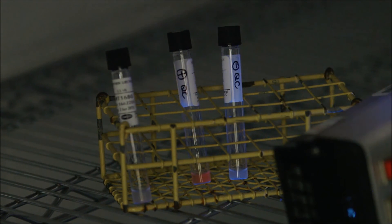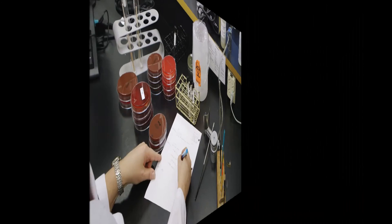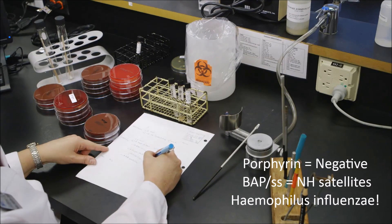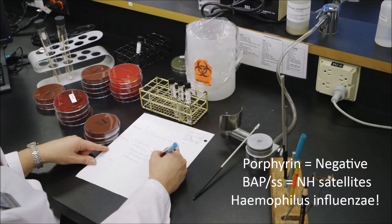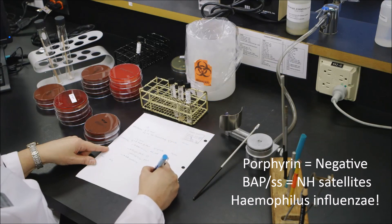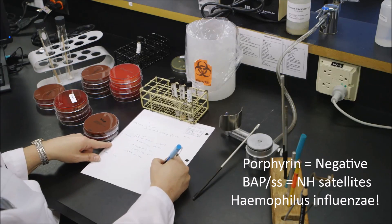So based on these results, the unknown is read as porphyrin negative. So a negative porphyrin, a BAP staph streak that shows non-heme satelliting is equal to Haemophilus influenzae.